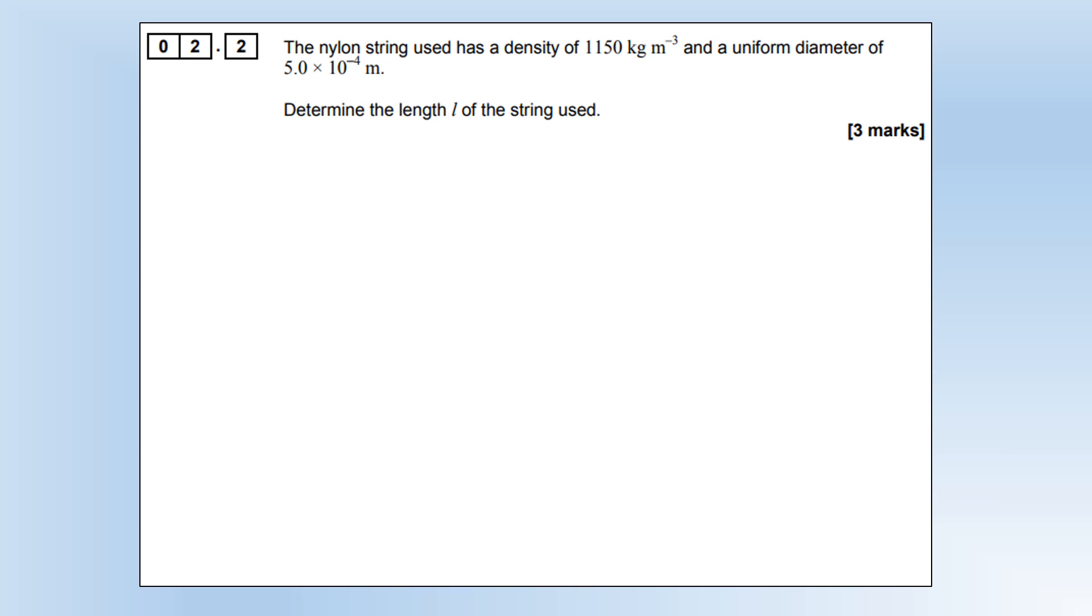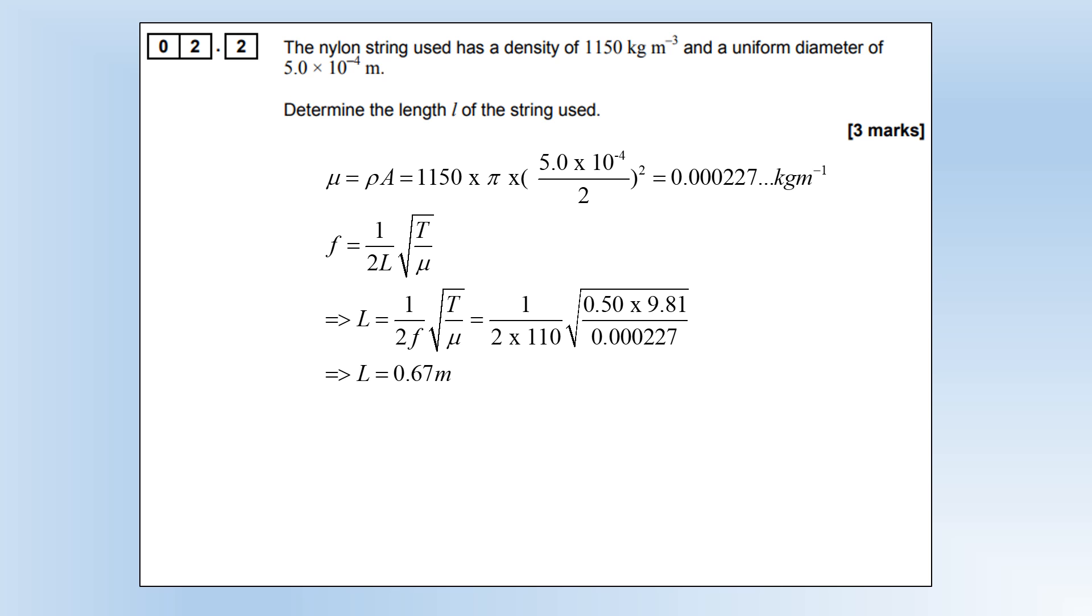The nylon string has a density of 1150 kg/m³ and a diameter of 5×10⁻⁴ m. Determine the length of the string. We're going to use the equation f = (1/2L)√(T/μ). First, we need to figure out what μ is. The density is in kg/m³, so if you multiply it by the cross-sectional area, that gives kg/m or mass per unit length. Once we figure out what that is, we can rearrange our equation to make L the subject, plug our numbers in, and we end up with L equal to 0.67 meters.